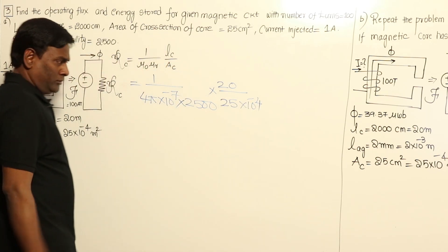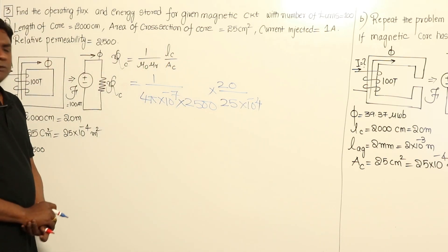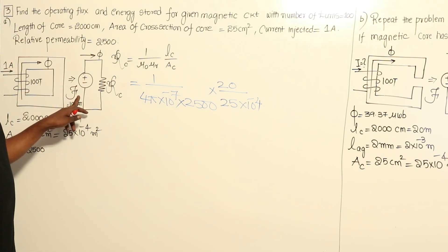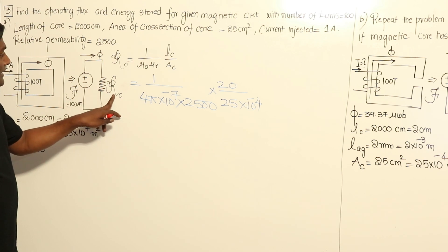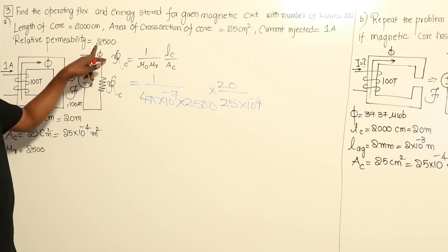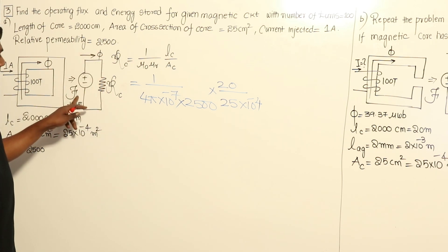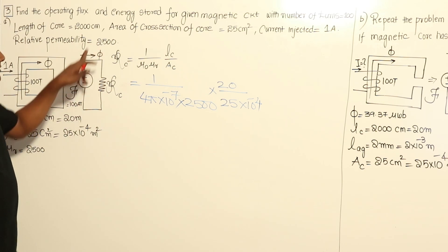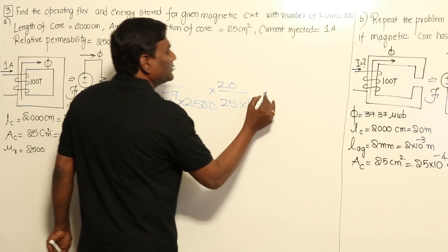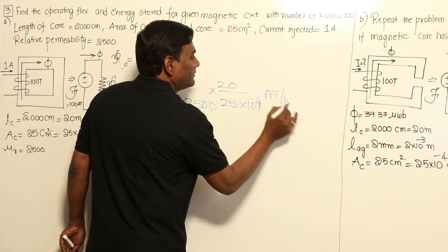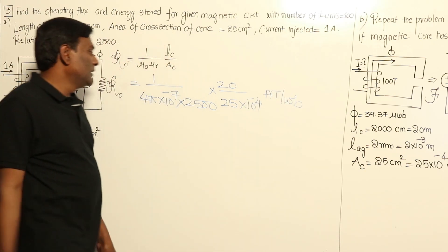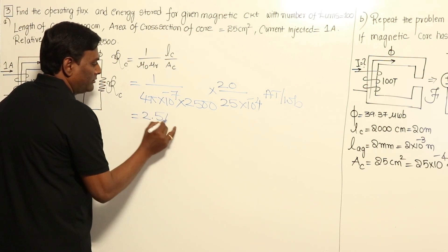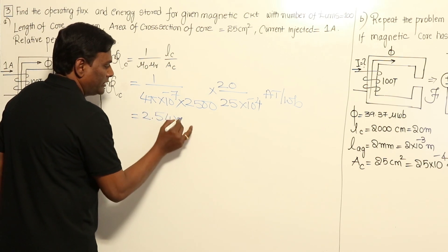Always remember to include dimensions — especially for IES descriptive answers. What is reluctance? It equals MMF divided by flux. MMF is in ampere turns, flux is in webers, so the dimension of reluctance is ampere turns per weber. If you calculate this, reluctance comes to 2.54 × 10⁶ ampere turns per weber.